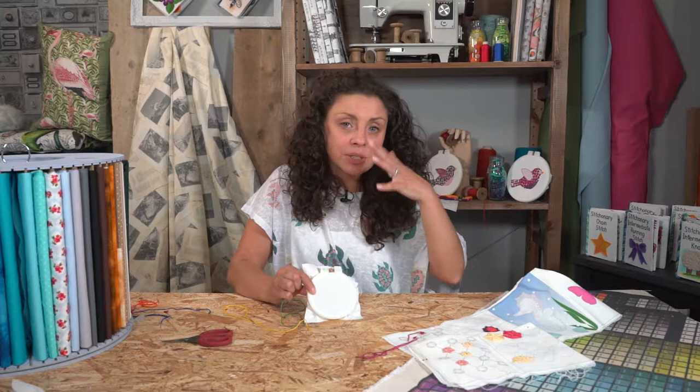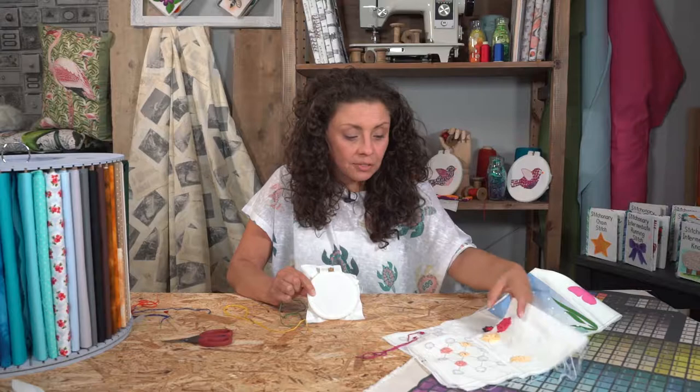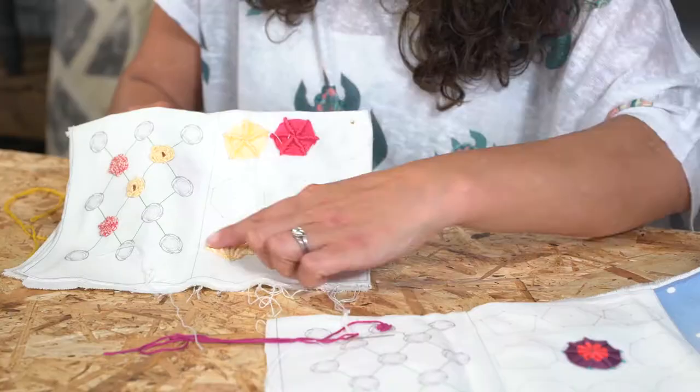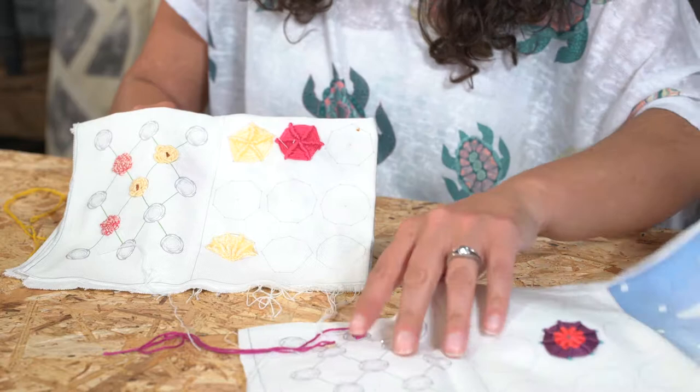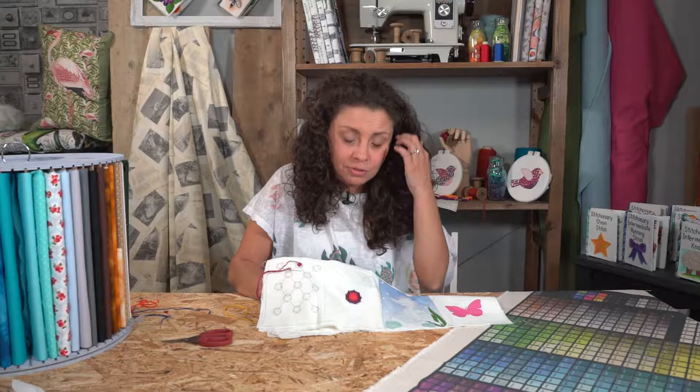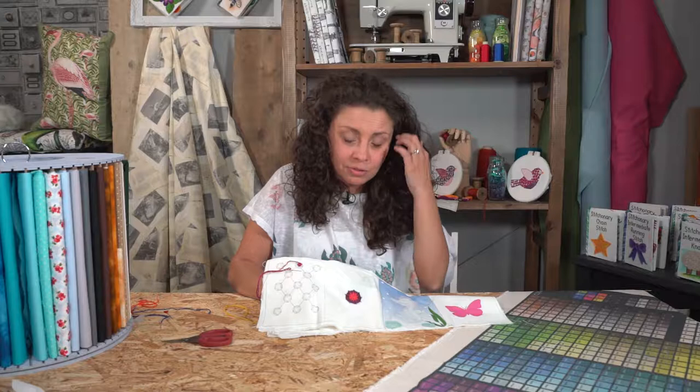Now you can do this with a different number of spines coming in every time and it will look different. I've got a couple of examples here before we start. This one is using five, this one is using six, seven, eight, this one's nine. So you can see you can get quite different results depending on how tightly you pack it and how many spines you use as well.